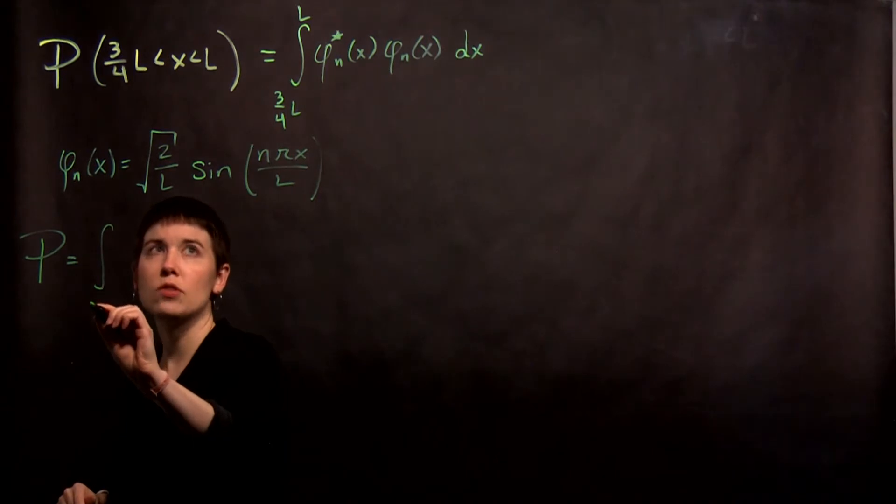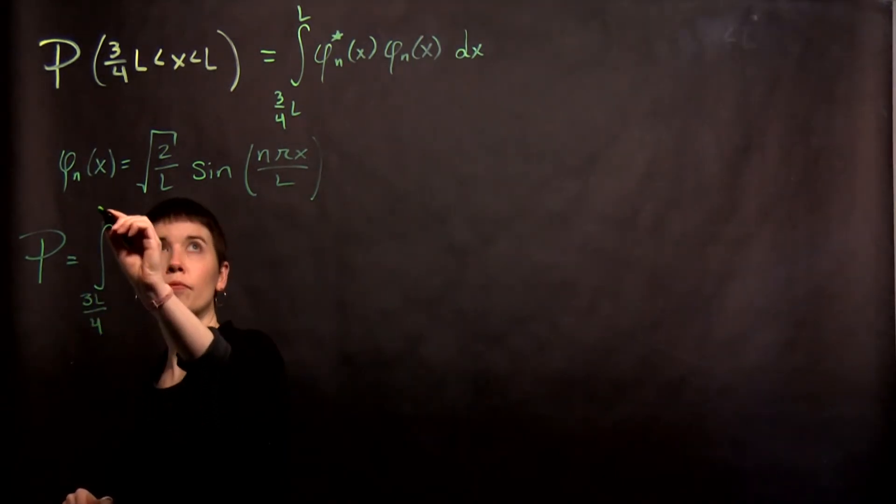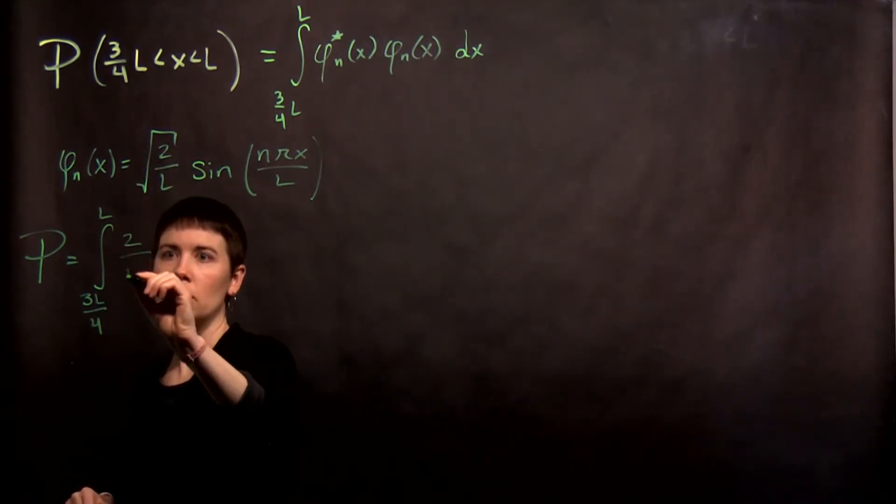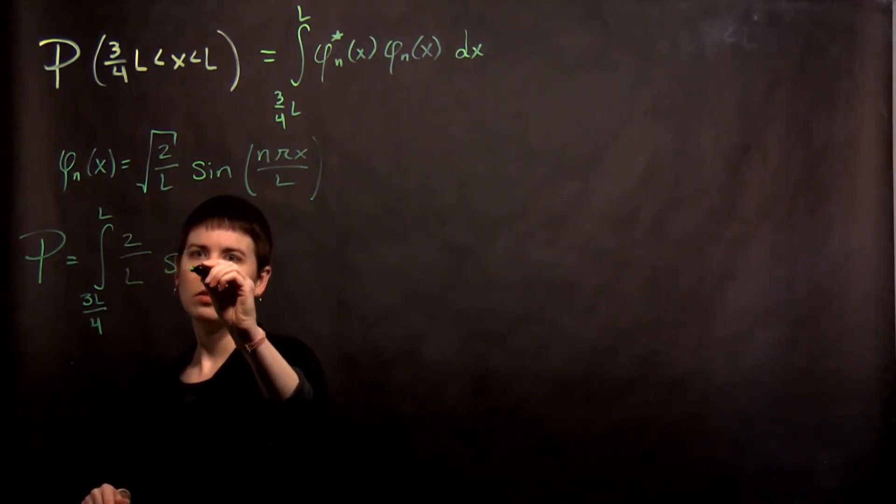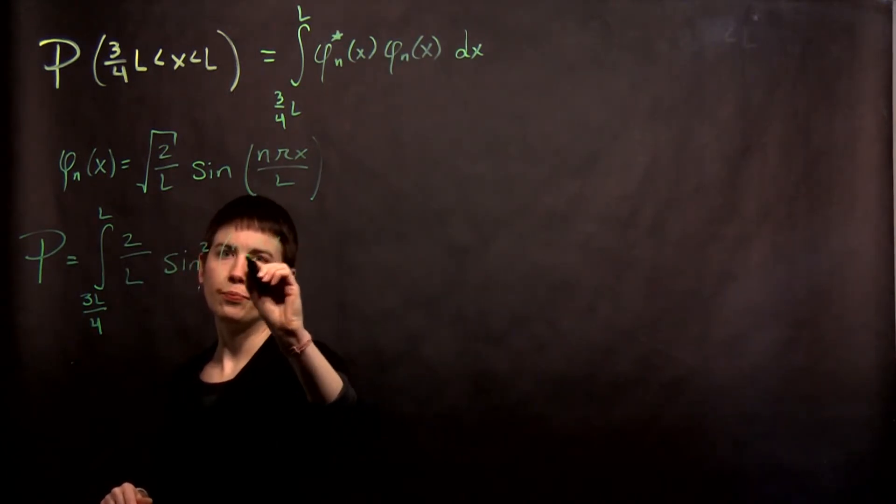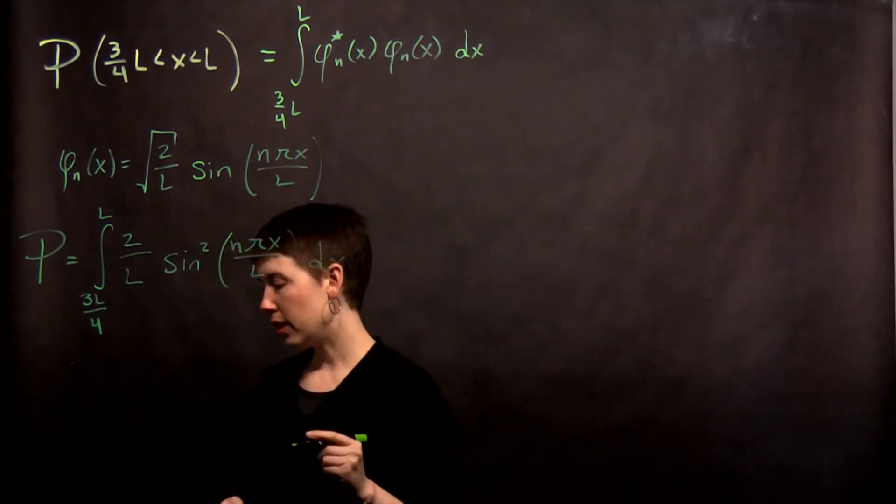So I still have that integral, and it's important to notice here that it is a bounded integral, not indefinite. And so when I square this, I get 2 over l sine squared of n pi x over l. Okay? And then dx. So now I need to integrate that.